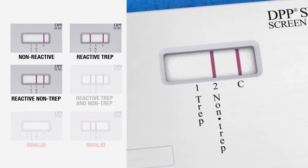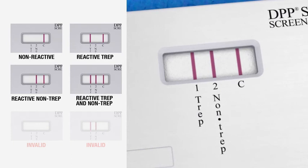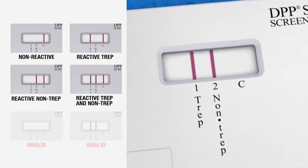Be aware that the presence of any reddish color in a given test line, along with a visible control line, is considered reactive. Finally, if a reddish control line has not formed above the C marking in the test window, regardless of whether or not a test line is present above the markings 1 TREP or 2 NON-TREP, then the test is invalid and a new test must be performed.